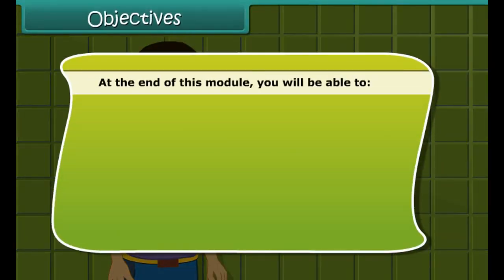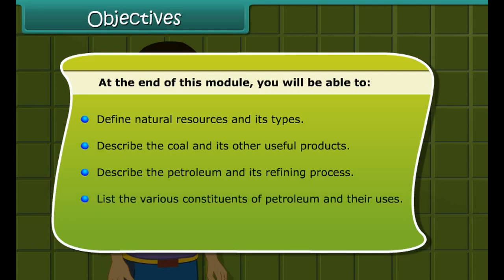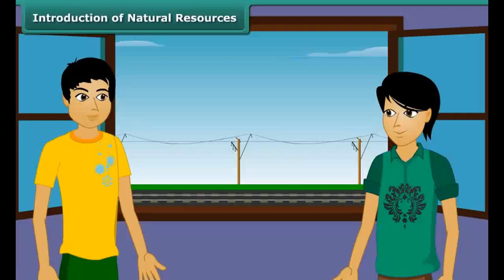At the end of this module, you will be able to: define natural resources and its types; describe coal and its other useful products; describe petroleum and its refining process; list the various constituents of petroleum and their uses; and describe natural gas and its importance.